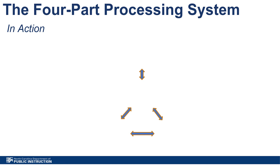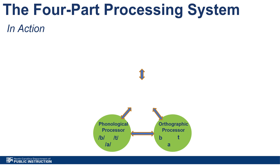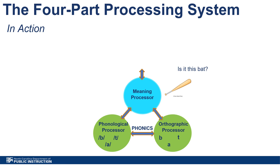Let's look at the four-part processing system in action with an example. The student encounters the word bat. Our eyes see the symbols — the letters B, A, and T — and the orthographic processor identifies them as letters or a word. Then the phonological processor attaches sounds /b/, /a/, /t/ to the symbols. This is phonics. The student then reads the word as bat. The meaning processor steps in and brings up any meanings of the word stored in the student's lexicon — the actual bat used in baseball comes to the student's mind, or perhaps a player is next up to bat.